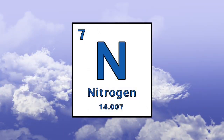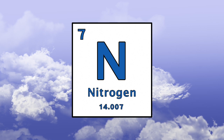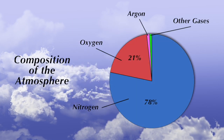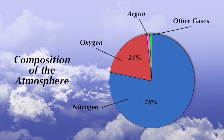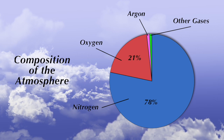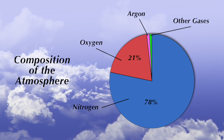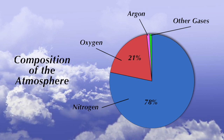Nitrogen is the most common element in the air, comprising about 78% of our atmosphere, followed by oxygen, argon, carbon dioxide, water vapor, and other gases.